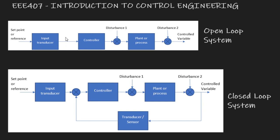It is technically possible to have a disturbance coming in before the controller, but many times we draw it this way. Then you have your plant or process, which is the actual system we're trying to control, and you may have some disturbance on that side as well. Disturbance one and disturbance two don't have to be there, but they may come in, and then you have your control variable.